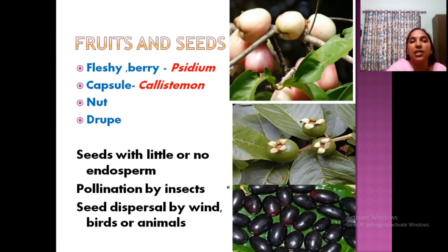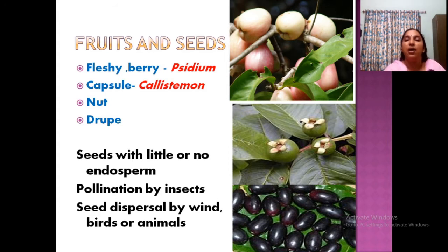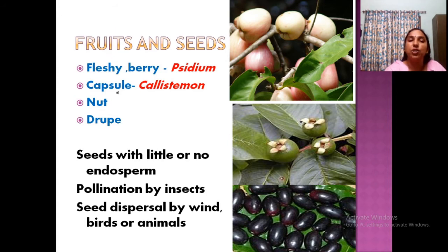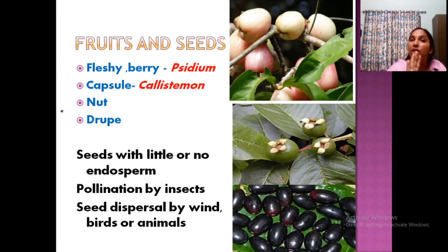Now for fruits and seeds: familiar examples include rose apple (jambaka), pereka, and navel. All types of fruits are present. Berry is the most common — in Psidium it is a berry. Capsule is found in Callistemon; nut and drupe are also present. Seeds have no endosperm — another peculiar feature. Seeds are dispersed by birds and animals, and pollination is by insects.